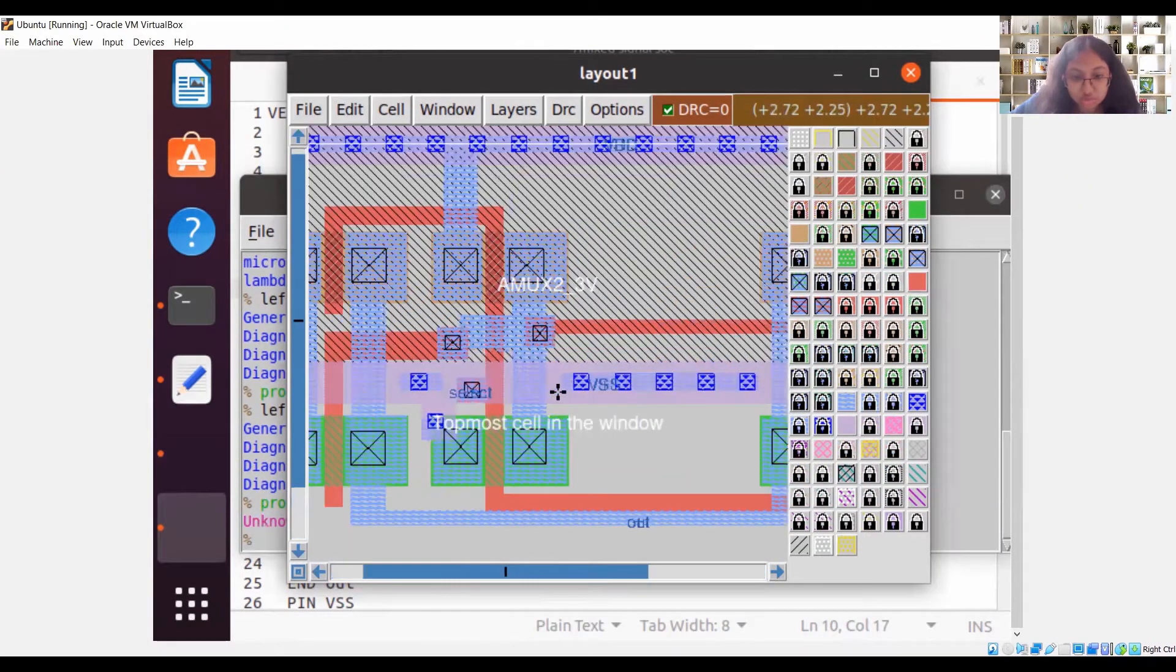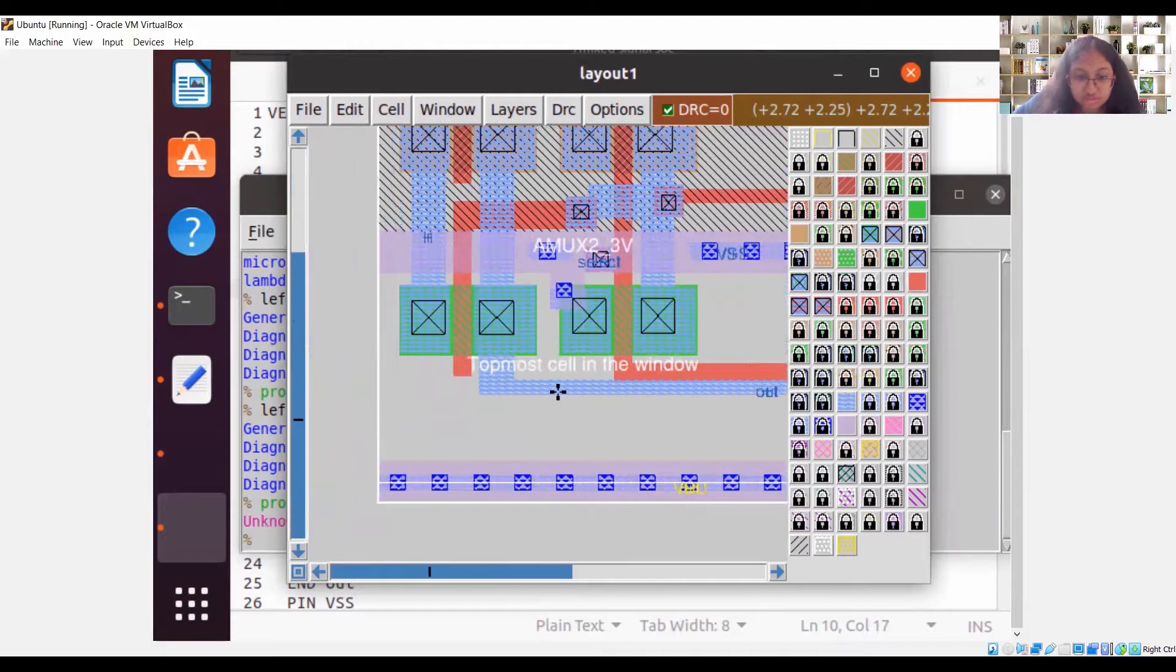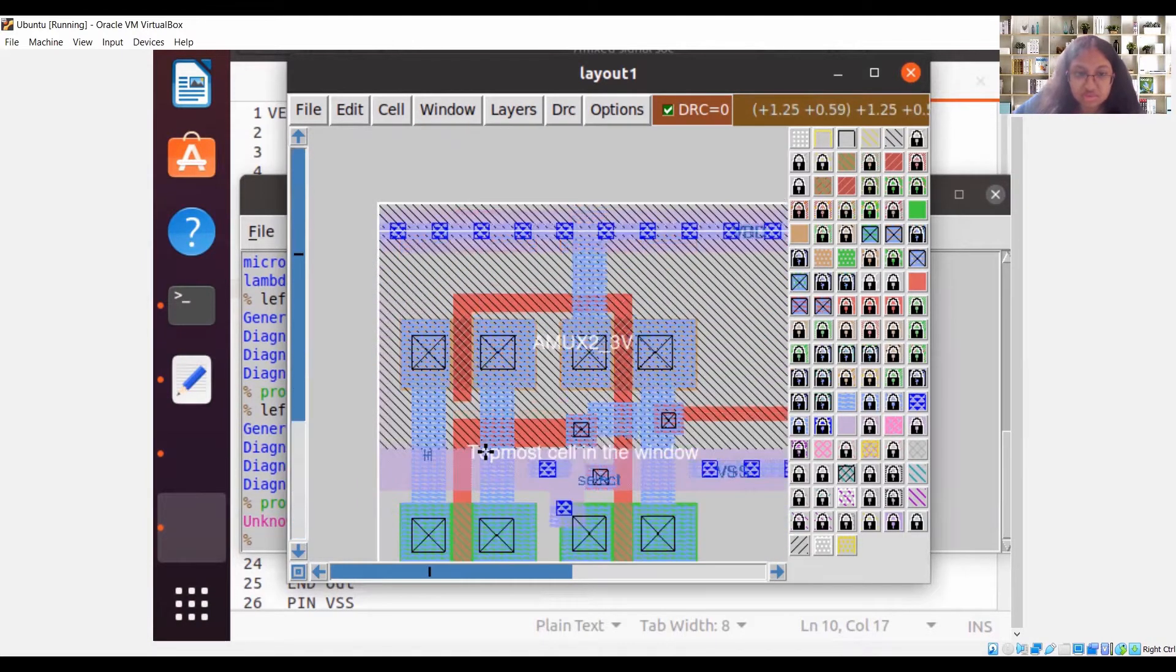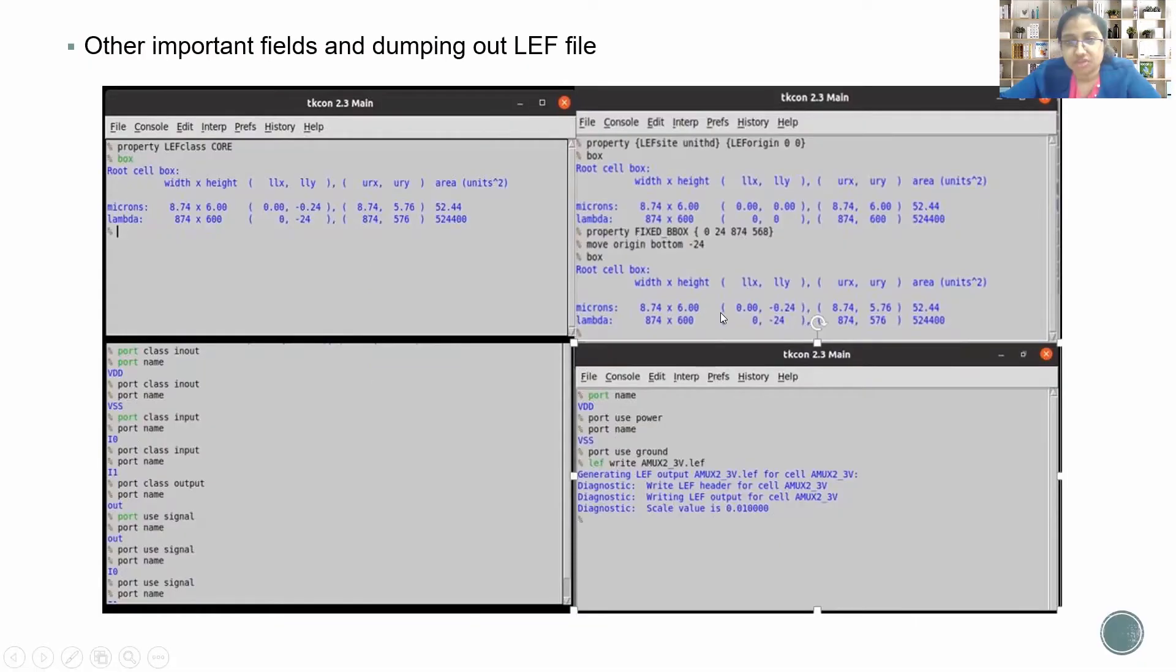We will take a closer look over here. We have got our bounding box to the middle of it, middle of the power rail and also the top power rail, the middle of the top power rail.